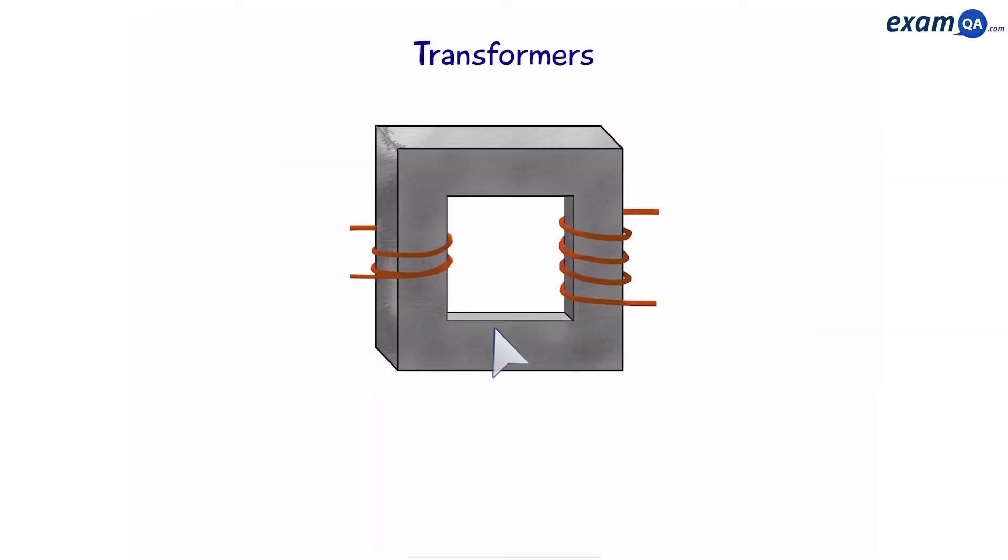Okay, we're going to look at two important equations that we need to know for transformers. In this transformer, we can see that the number of coils has doubled. For example, it's gone from two to four. That means the potential difference will also double. For example, if it was 10 volts initially, it will become 20 volts.